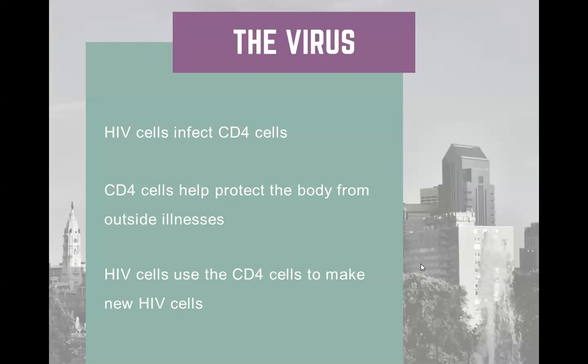What HIV does is weaken the immune system over time by hijacking the immune cells and turning them into cells that produce more HIV virions — more copies of HIV. Our immune system cells, or CD4 cells, are really important to keeping our bodies healthy and helping us stave off illnesses. When HIV infects the CD4 cells, they can no longer protect the body, and over time, without any treatment, folks can receive an AIDS diagnosis.